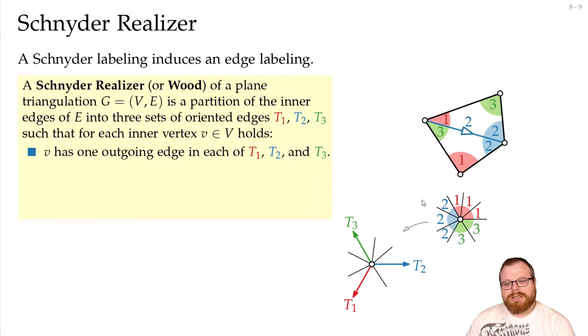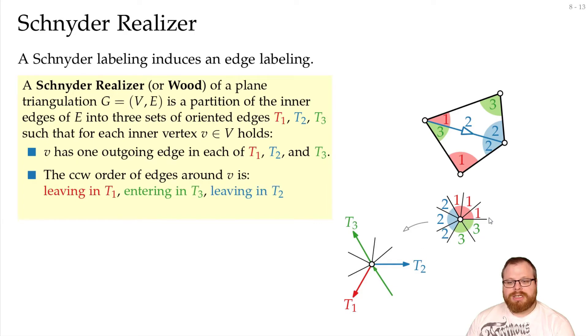And in between, all the edges must come in. So, if we look at the edges around this, then we first have this leaving edge. Then, everything here must be entering with a number 3. Then, we have this leaving edge. Then, everything here enters with a number 1. We have this leaving edge. And everything here enters with a number 2. So, we get a partition of the edges in three sets. The red, the blue, and the green set.